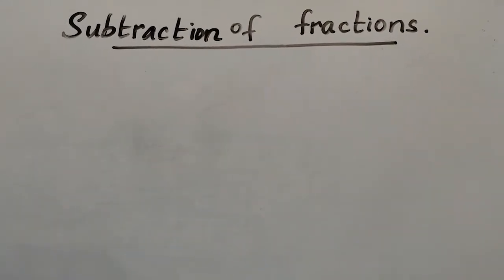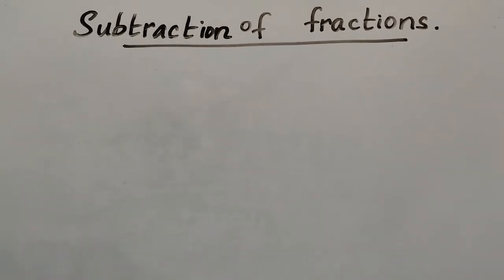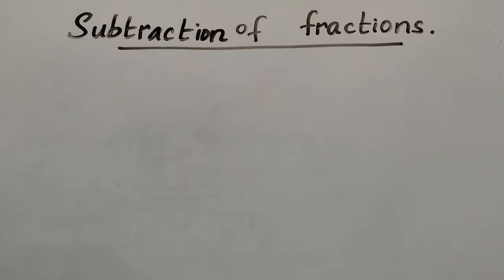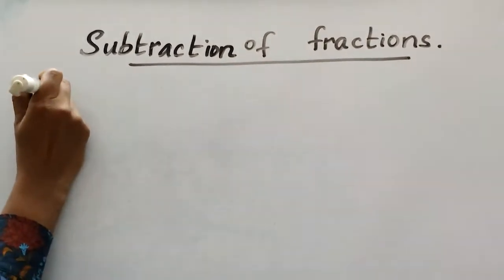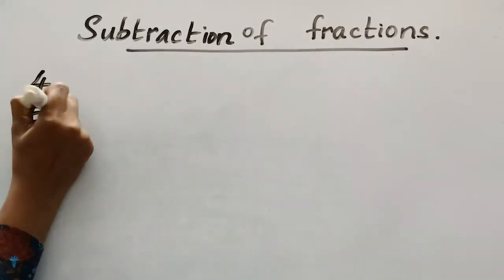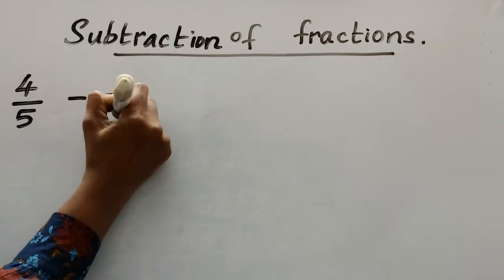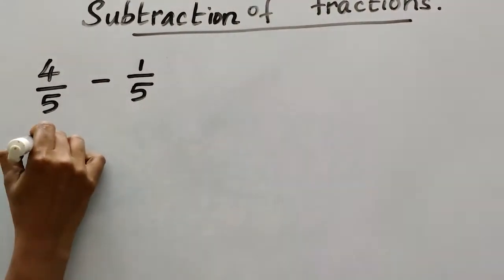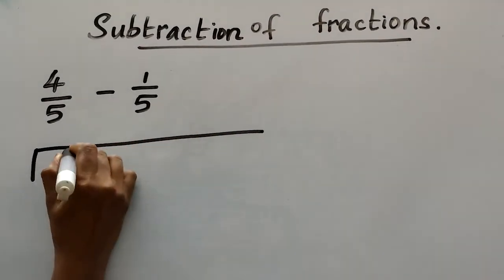I am going to explain like fractions. For like fractions, I will show you how to subtract using the example 1 by 5 minus 1 by 5. Here we have 4 by 5 — the shape is divided into 5 equal divisions.